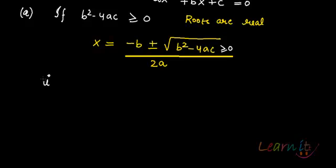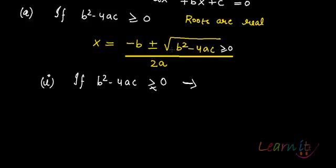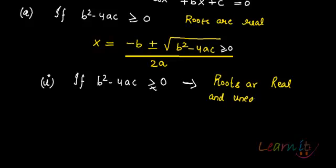Within this, if b squared minus 4ac is strictly greater than zero — not equal to zero, but strictly greater — then there is a positive number under the square root. The roots will be minus b plus that number over 2a, and minus b minus that number over 2a. Since something is being added and subtracted, you get two different numbers, so the roots are real and unequal.